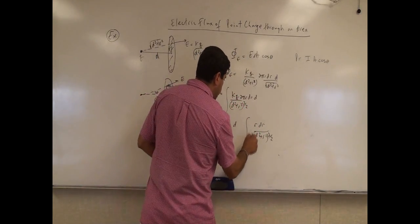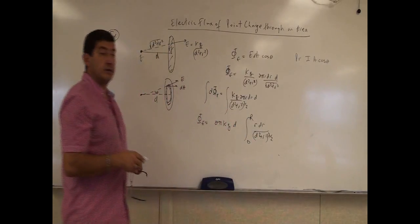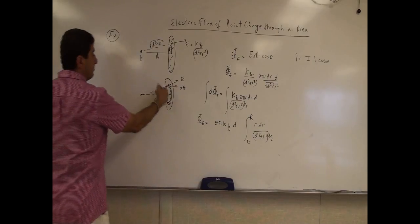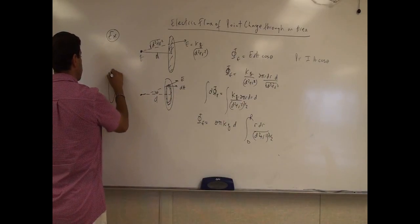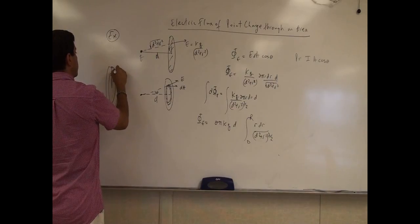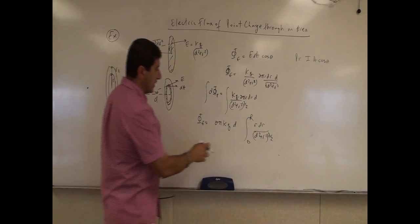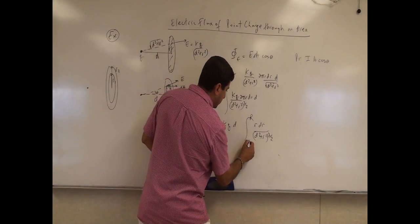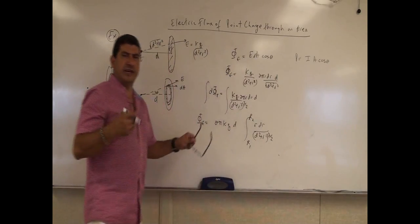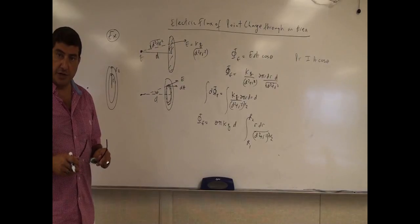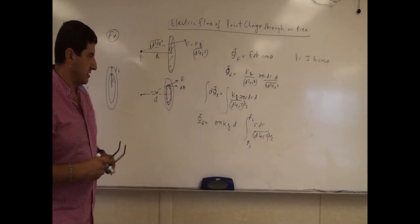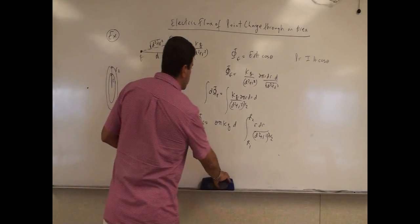We integrate this from zero to R. We could also, similarly like the sound wave, instead of a plate, if it was a ring with inner radius R1 and outer radius R2, then we can integrate from the inner radius R1 to the outer radius R2. So let's do that in general from inner radius to outer radius — then we can see what would happen to a plate. That would be the most general answer.